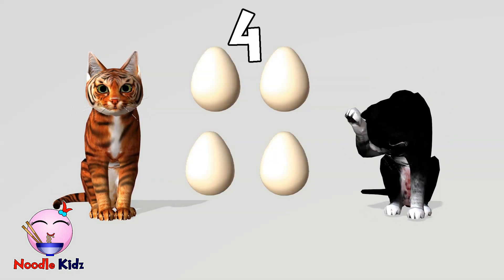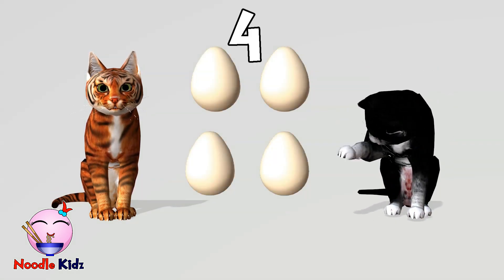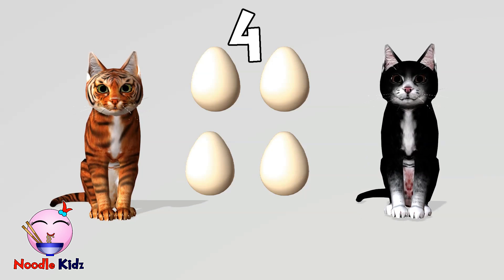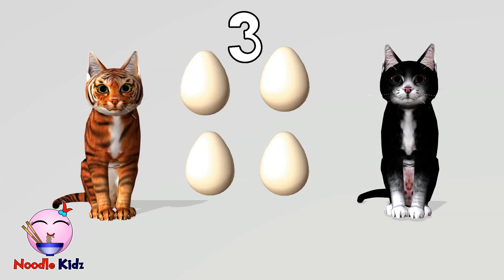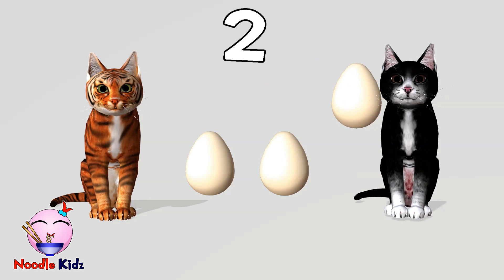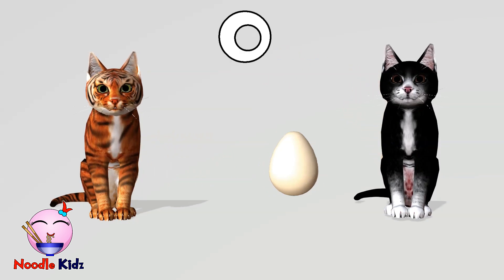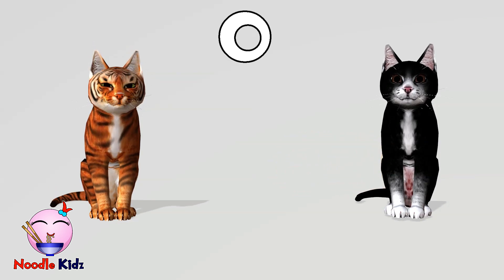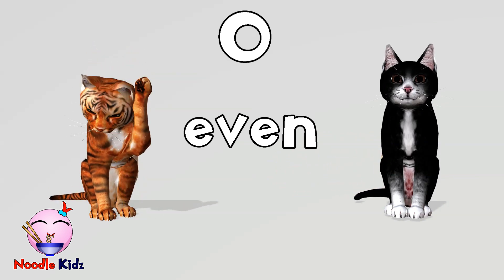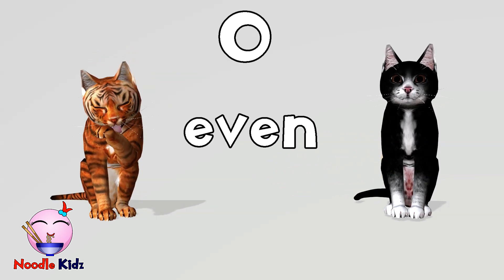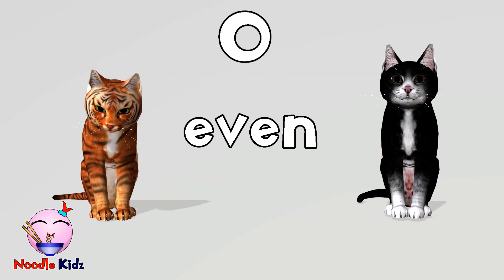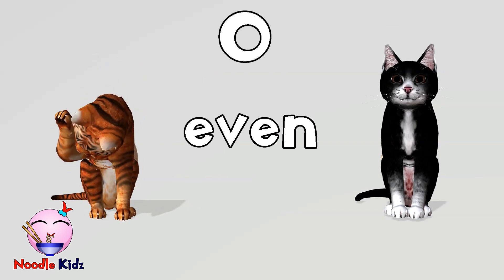What about four eggs? Let's divide the eggs. This egg is for this cat. This egg is for that cat. This egg is for this cat. And this egg is for that cat. No leftovers again, which means four is also an even number.